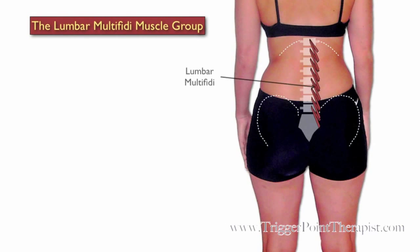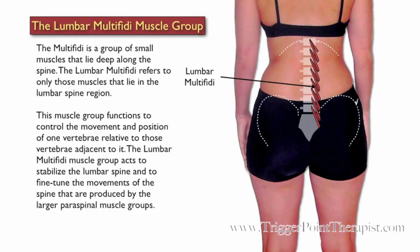The Lumbar Multifidi Muscle Group. The Multifidi is a group of small muscles that lie deep along the spine. The Lumbar Multifidi refers to only those muscles that lie in the lumbar spine region. This muscle group functions to control the movement and position of one vertebrae relative to those vertebrae adjacent to it. The Lumbar Multifidi acts to stabilize the lumbar spine and to fine tune the movements of the spine that are produced by the larger paraspinal muscle group.